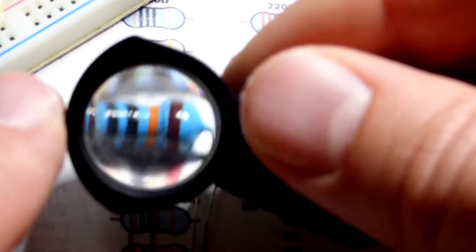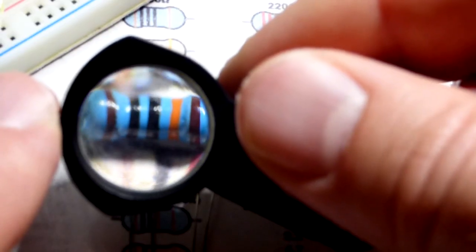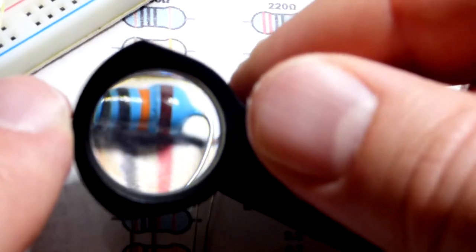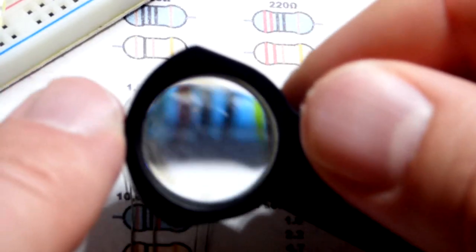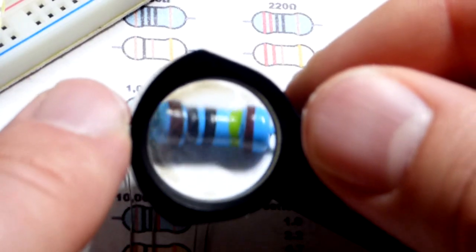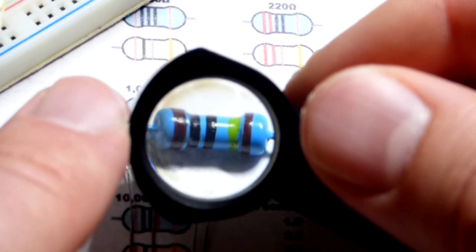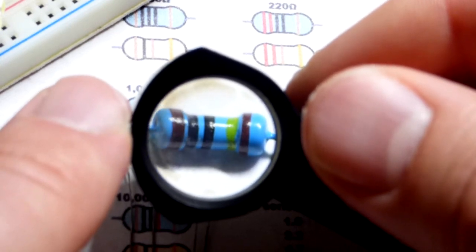And so this is a 100,000 ohm resistor, 100 and then three more zeros. So I don't know how well it's gonna look after this gets done processing. It looks actually really good.